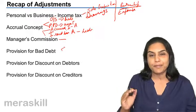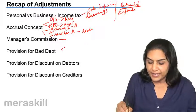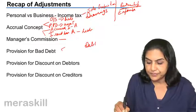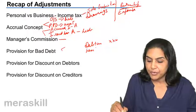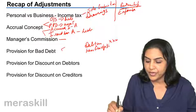This provision is created by debiting profit and loss account and creating a provision account with a credit balance. How is it shown in the balance sheet? As a deduction from debtor, we have a provision for doubtful debt.